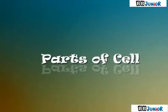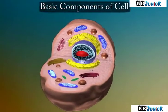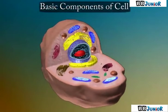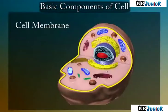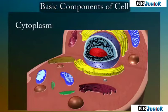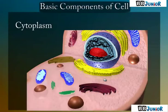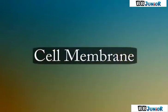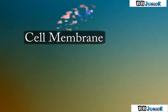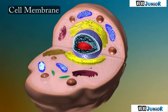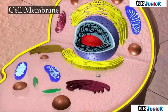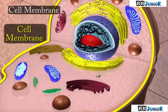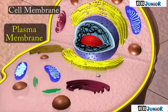Parts of a Cell. The basic components of a cell are: Cell Membrane, Cytoplasm, and Nucleus. Different components of a cell are enclosed by a membrane called the cell membrane. This is also called the Plasma Membrane.